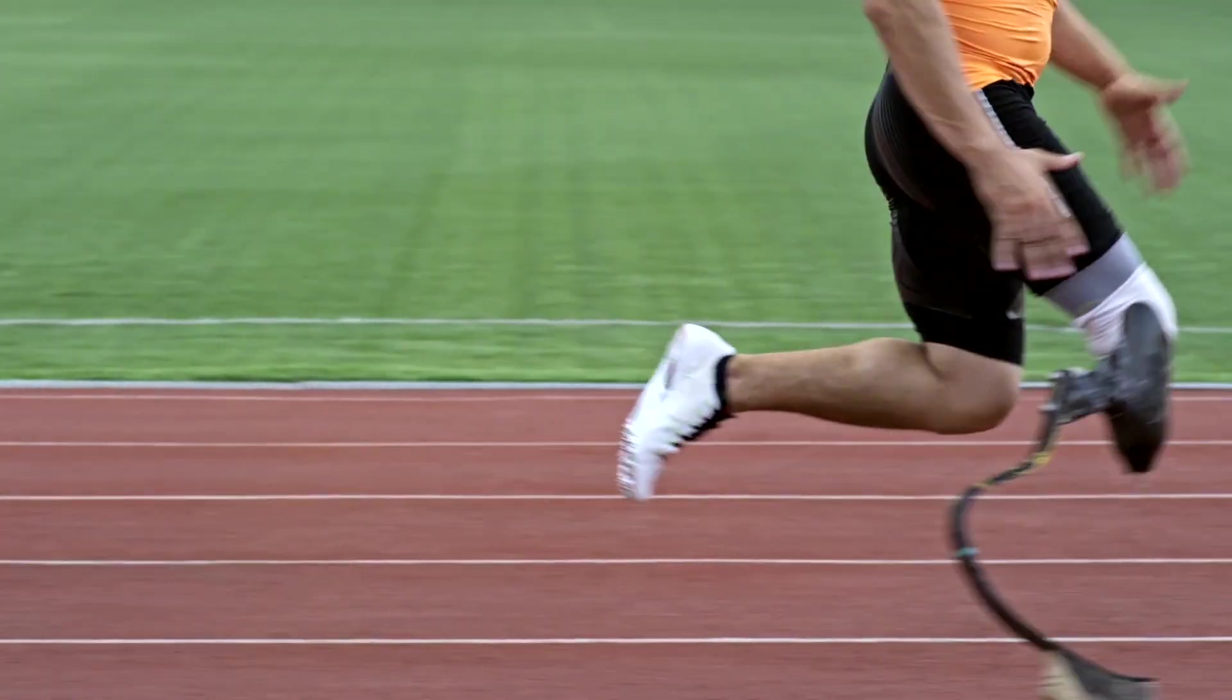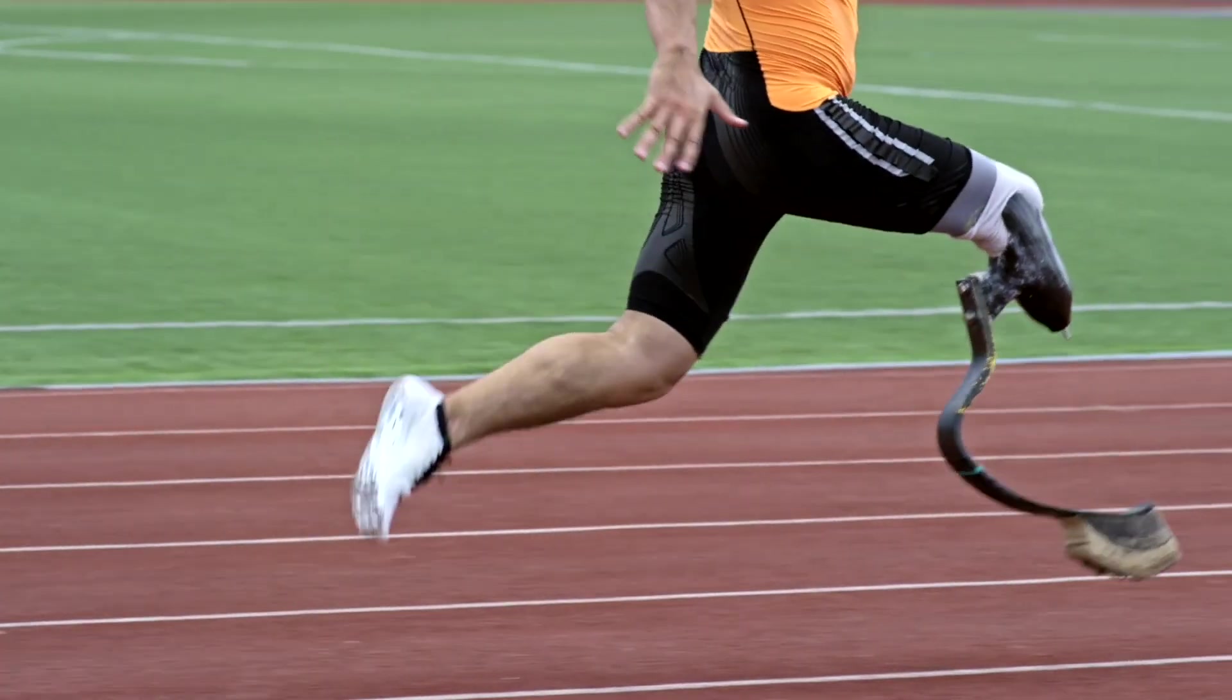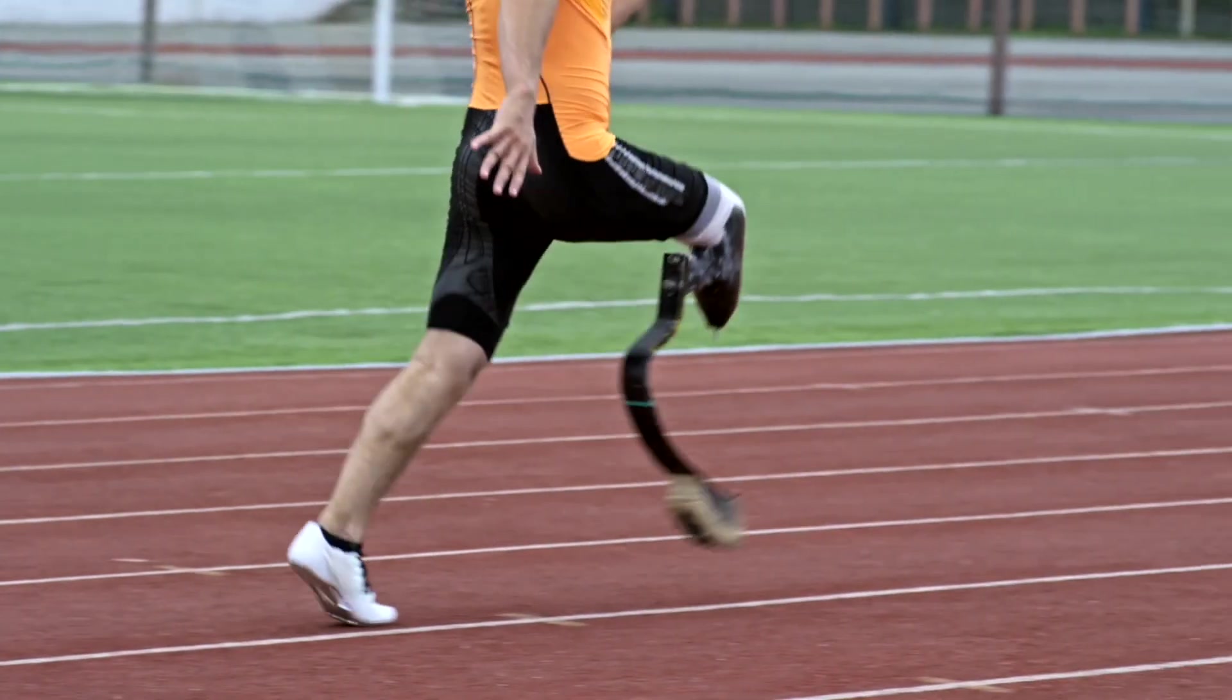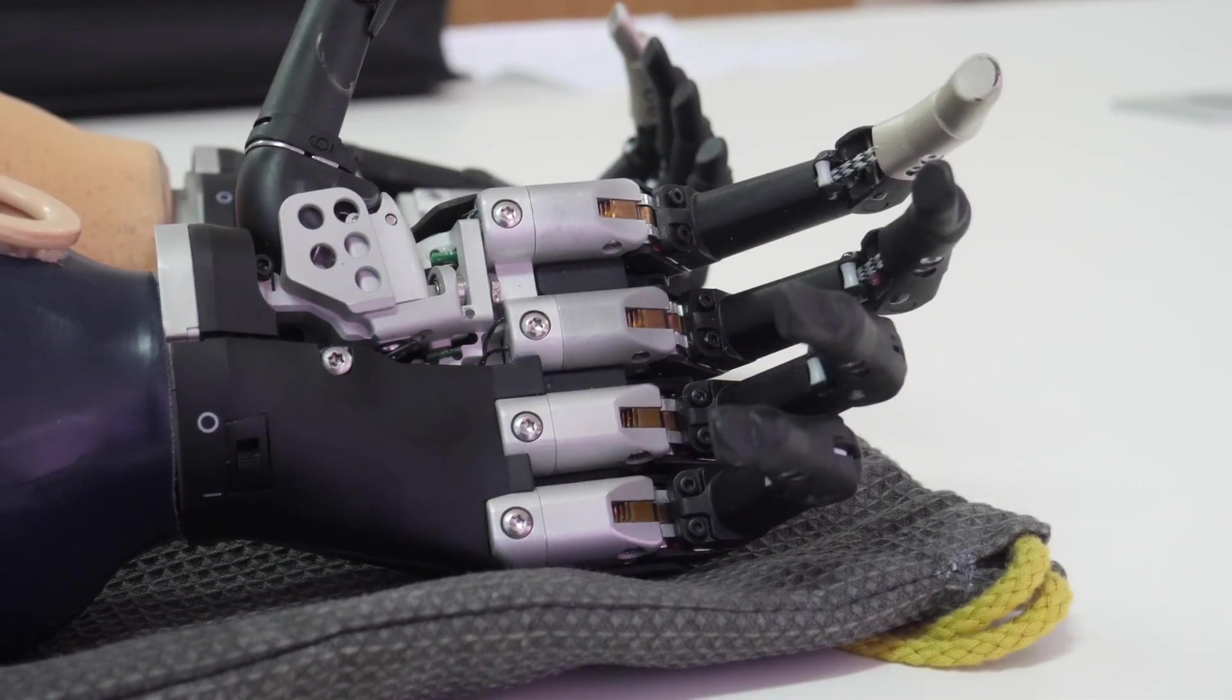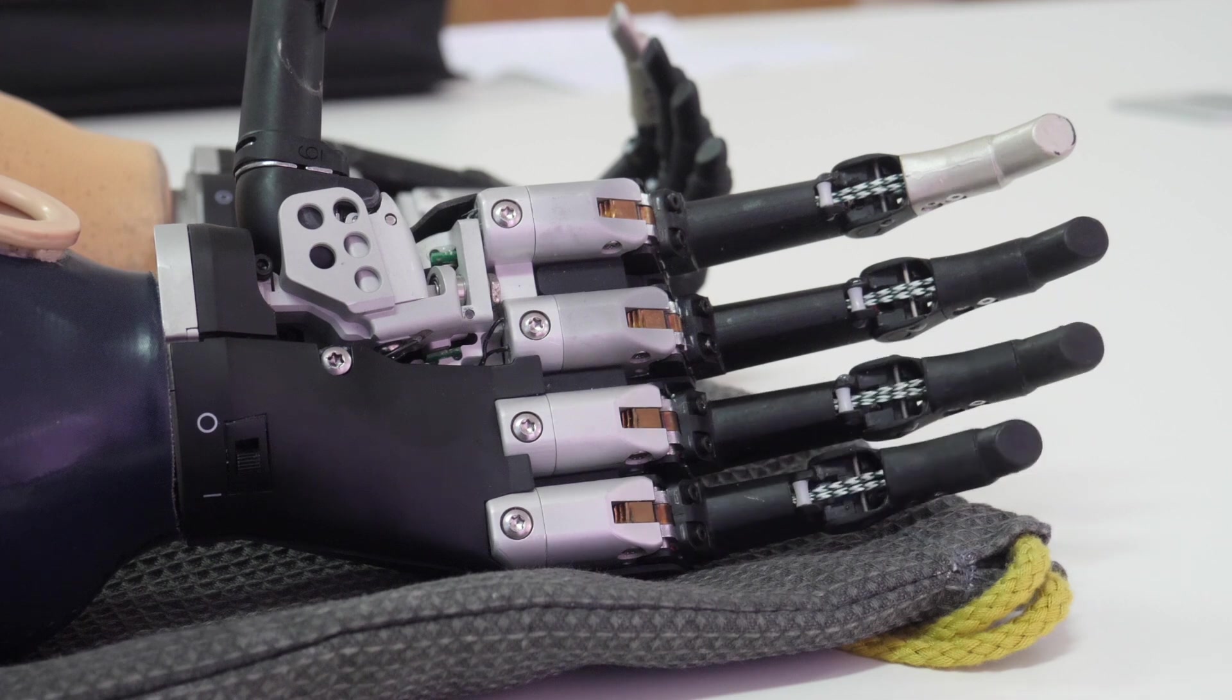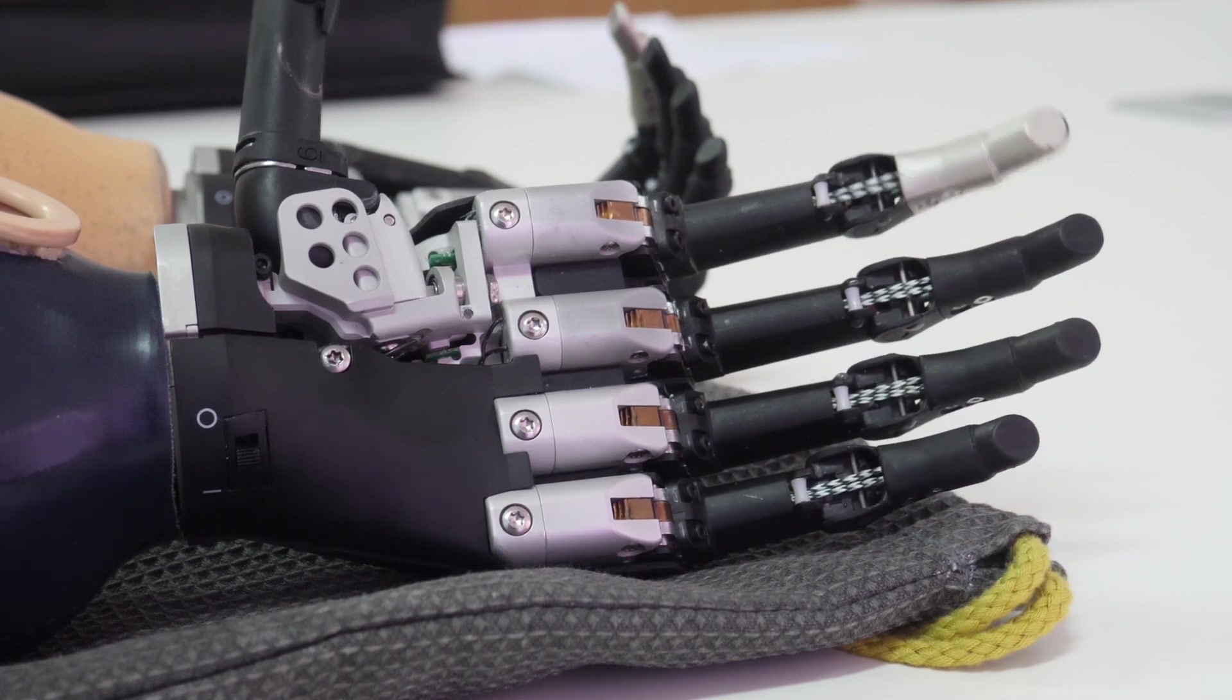Prosthetics also help disabled athletes to participate in physical activities. For example, athletes with prosthetic limbs can run, jump, and compete in events like the Paralympics. Advanced prosthetics can also enable users to perform more delicate tasks, like playing musical instruments or typing on a keyboard.